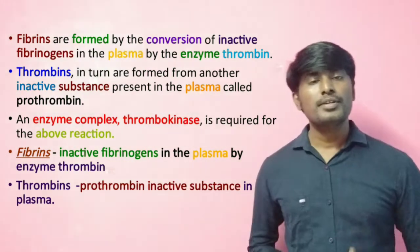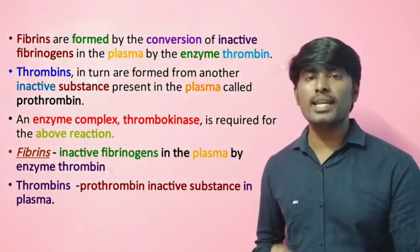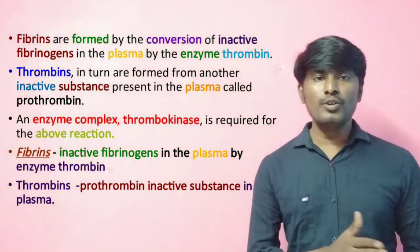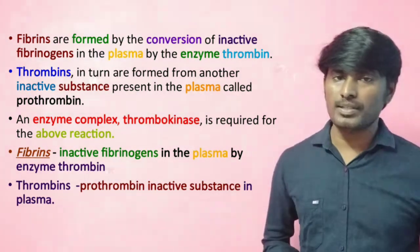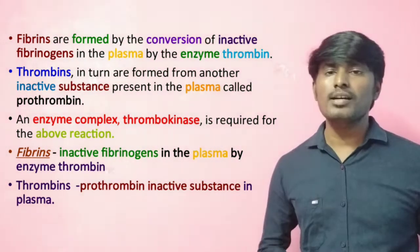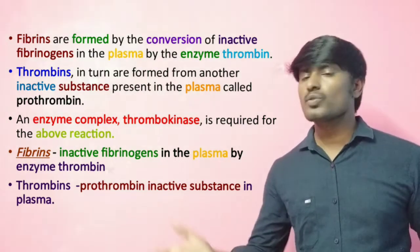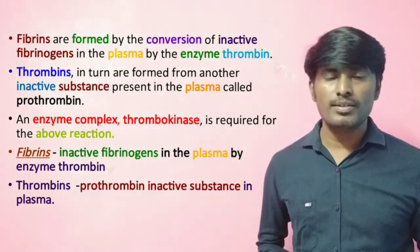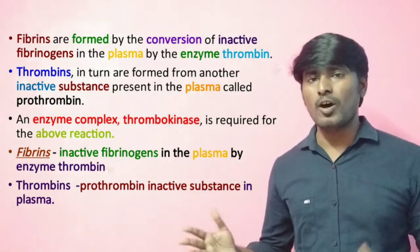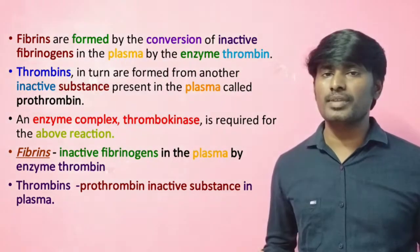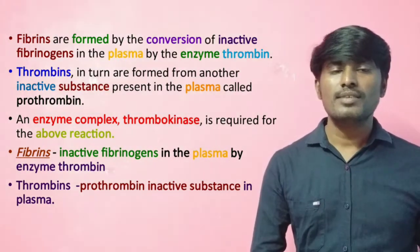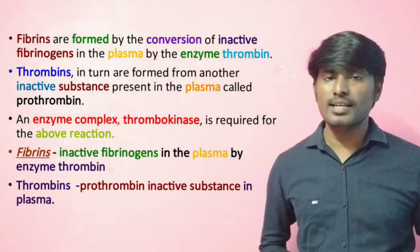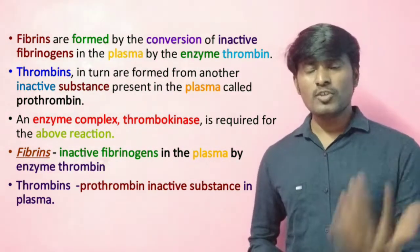The thrombin enzyme is produced from an inactive substance found in the plasma. The name of this inactive substance is called prothrombin. Thrombin enzyme is formed from the inactive substance prothrombin, which is found in the plasma, as an enzyme complex.